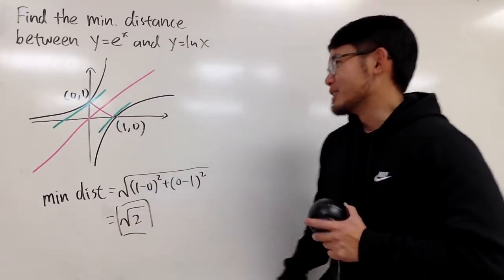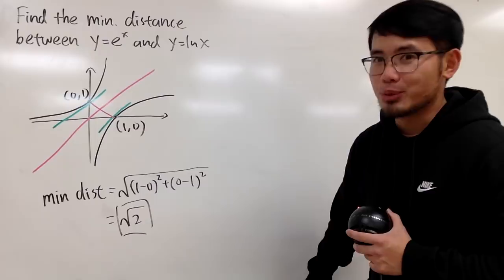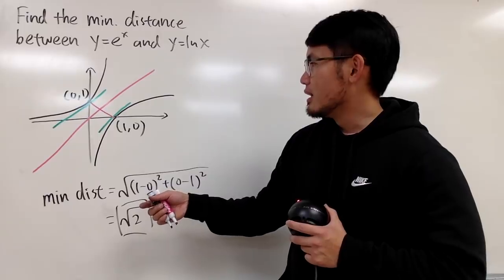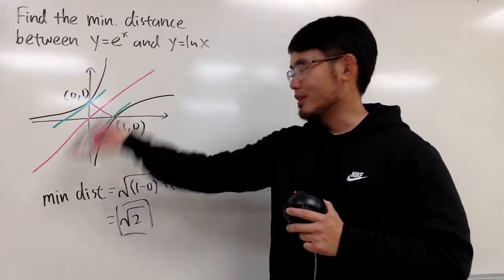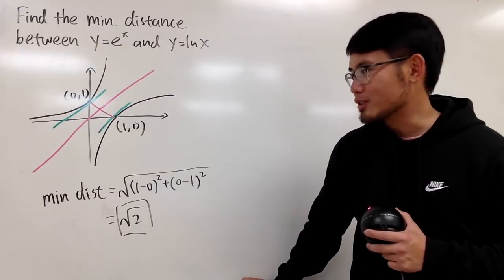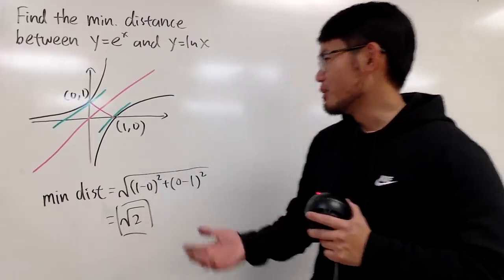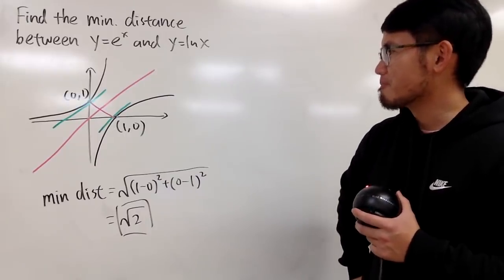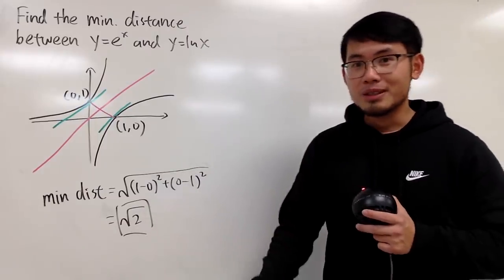You just find where the tangent lines are parallel, then find the distance between those two points. This works because they are inverse functions of each other. Leave a comment if there's any technical detail I should provide, but √2 is the answer.